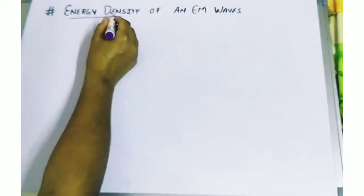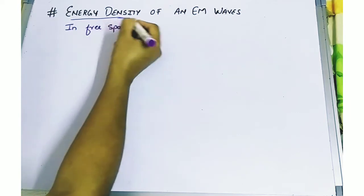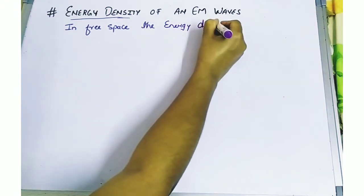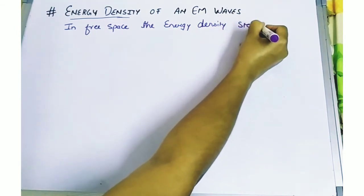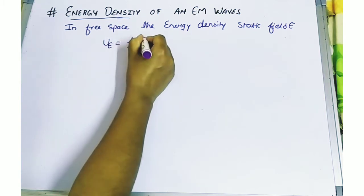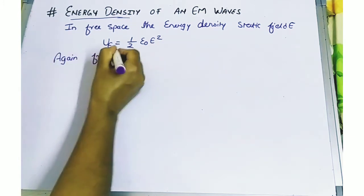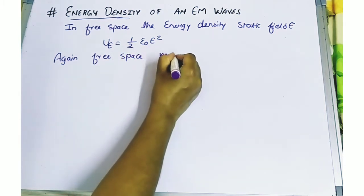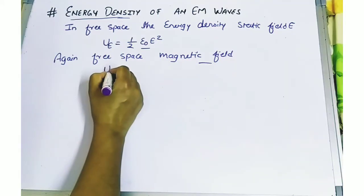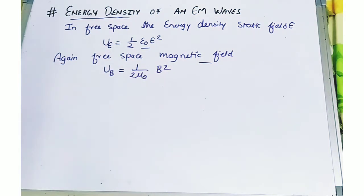In free space, the energy density of the static electric field — which we have already calculated previously — is UE equals half of epsilon naught E squared. And the energy density in free space for the static magnetic field, calculated in unit 2 and unit 3, is UB equals 1 upon 2 mu naught B squared.